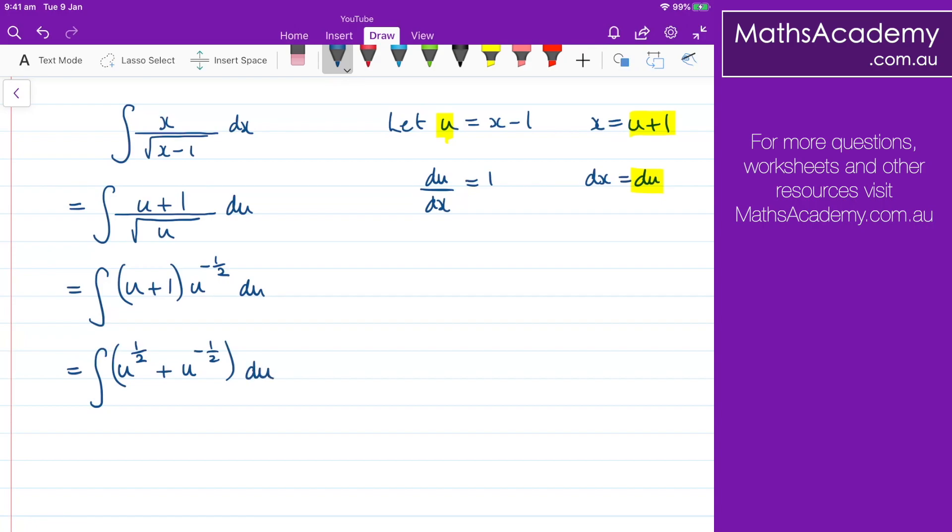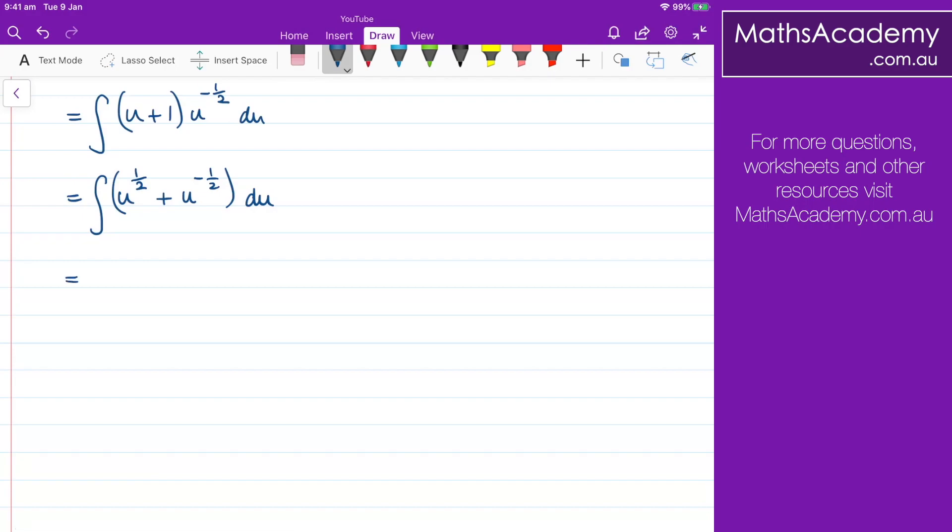Now, I can go ahead and do the integral. So u to the power of 1 half would be u to the power of 3 over 2. And that would be divided by 3 over 2. But when I'm dividing by 3 over 2, that's the same as multiplying by 2 over 3.